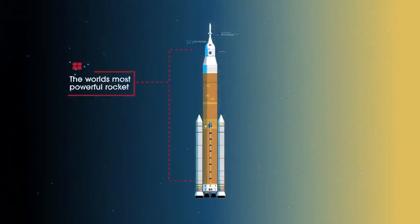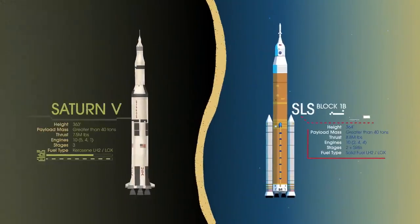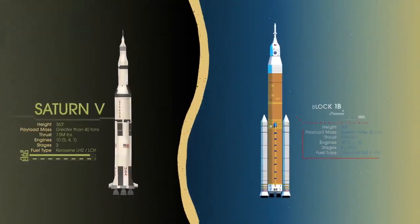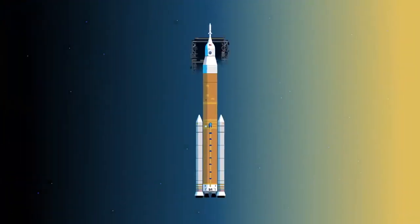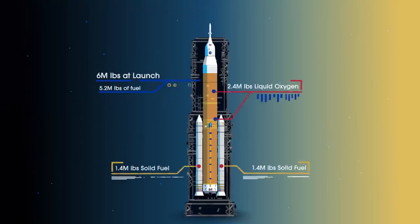Altogether, this is the world's most powerful rocket, and it exceeds the legendary Saturn V of the Apollo era in numerous ways. Sitting on the launch pad, the entire rocket, fully fueled, weighs just over 6 million pounds, 5.2 million of which is just the fuel.